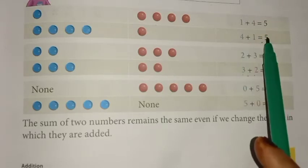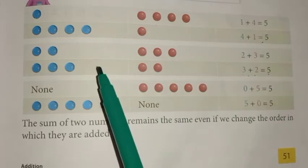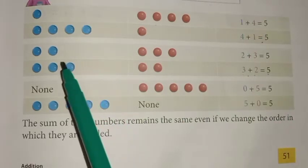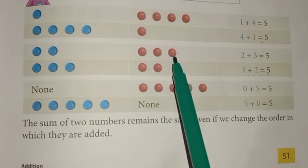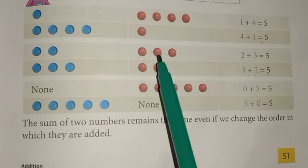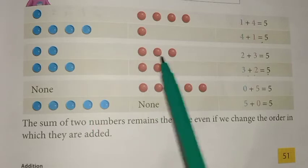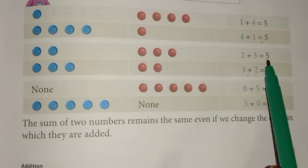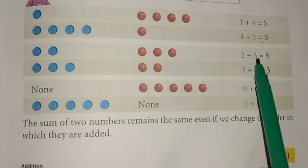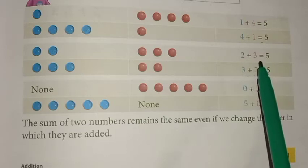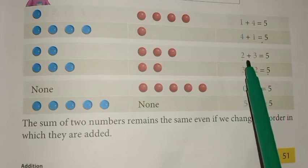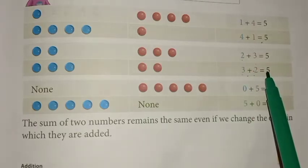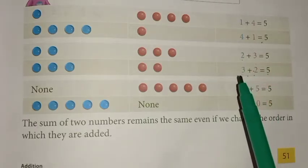One plus four is equal to five and four plus one is equal to five. Next example: here two marbles and here three marbles, so we can add two plus three equal to five. Then we can change the addition order — the answer will be the same. The two comes last, so three plus two is equal to five.